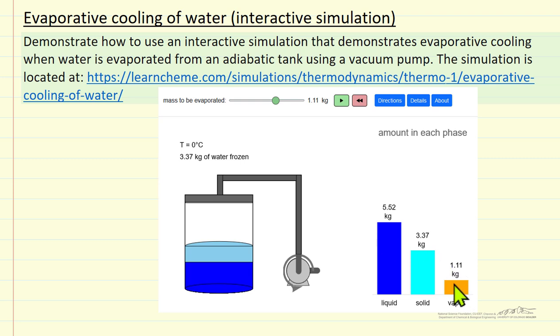The simulation shows how much vapor we removed, but what we've done is cooled down liquid to freezing temperature, and then we start freezing some of the water and making ice.